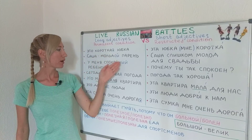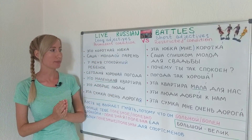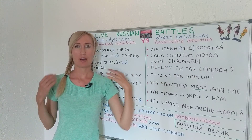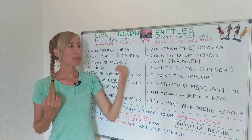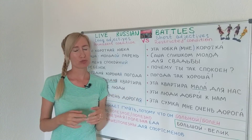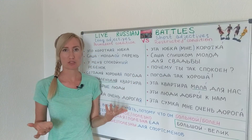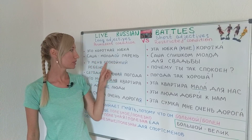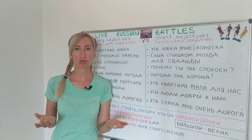Let's continue. У меня спокойный ребенок — I have a calm child, he's generally calm. Compare with почему ты так спокоен? — Why are you this calm? This is a restricted condition about a situation — maybe in that situation a person shouldn't be calm, so another person asks why. Notice that спокойный becomes спокоен; it can't simply be спокойн because that is very difficult to pronounce.